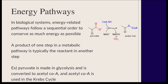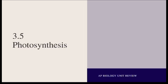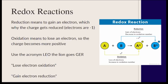In biological systems, in order to conserve as much energy as possible, pathways follow a sequential order — evident in photosynthesis and respiration — where the product of one step is the reactant for the next. An example is pyruvate: made in glycolysis after glucose is broken down, it moves from the cytosol to the mitochondria where it's converted to acetyl coenzyme A, which is then used in the Krebs cycle.